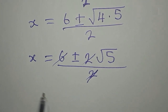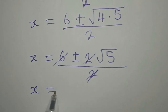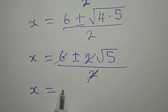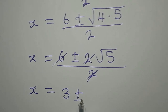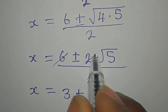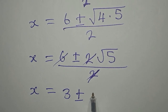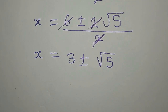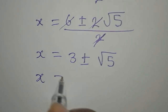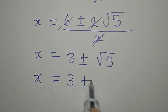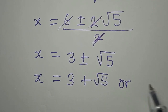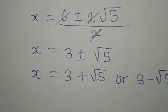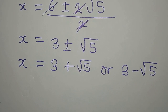Now we can divide through by 2: 6 divided by 2 is 3, and 2 divided by 2 is 1, so we get 3 plus or minus root 5. Therefore x equals 3 plus square root of 5, or x equals 3 minus square root of 5. These are the two values of x.